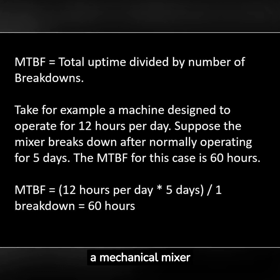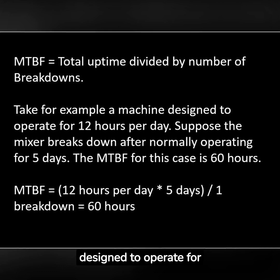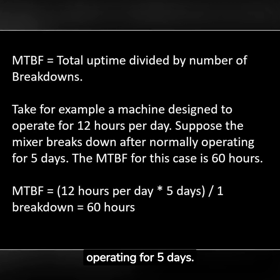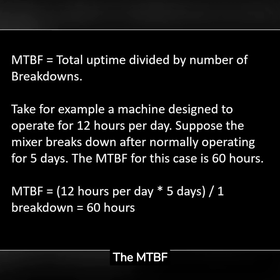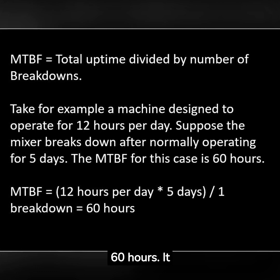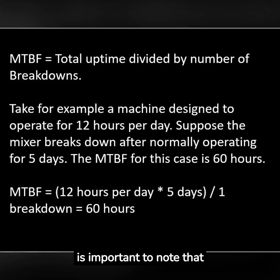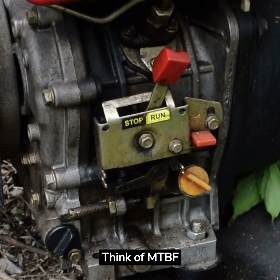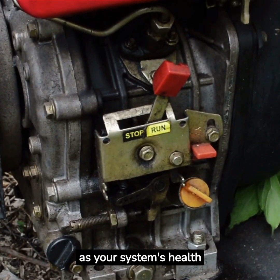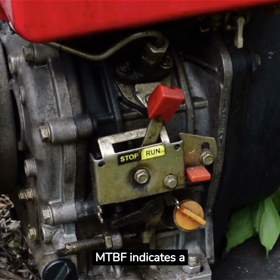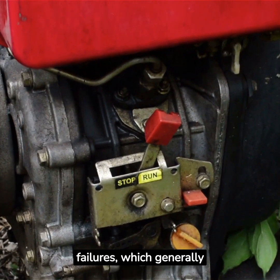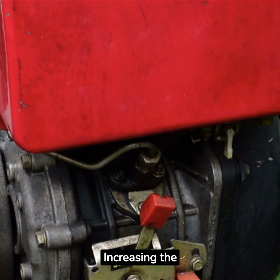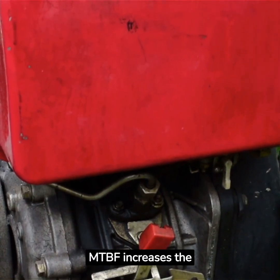MTBF is total uptime divided by number of breakdowns. Take for example a mechanical mixer designed to operate for 12 hours per day. Suppose the mixer breaks down after normally operating for 5 days — the MTBF for this case is 60 hours. It is important to note that MTBF is applicable only to reparable items. A higher MTBF indicates a longer time between failures, which generally means a more robust and reliable system.